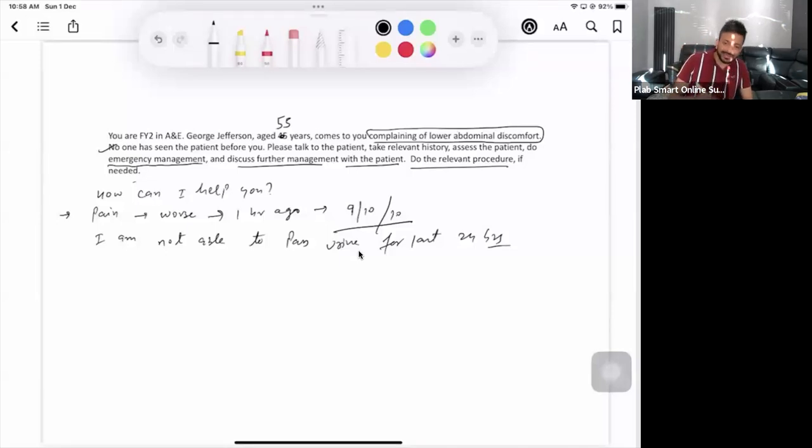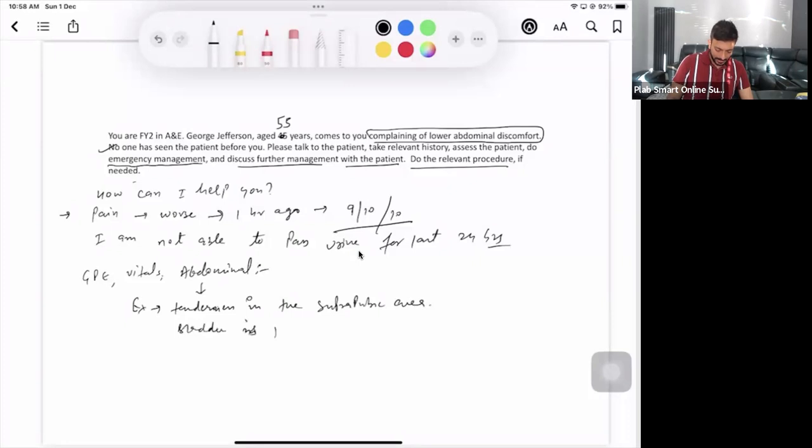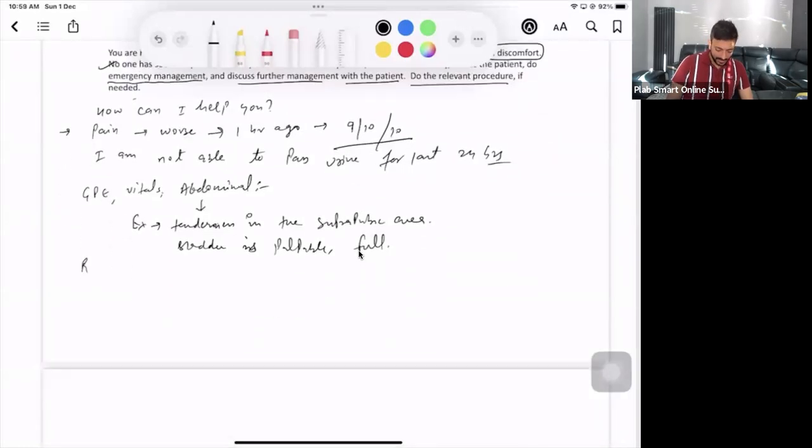What do you need to do? You need to relieve his pain. So what you will be doing? First of all, let's confirm if this patient has got urinary retention or not. How I can confirm? I've got one thing to do. I'll say, let me just have an examination. I'll do general physical examination and the main thing that I need to do is I will do abdominal examination. When you mention, they might give you the finding. Examiner will tell you, doctor, your patient has got tenderness in the suprapubic area. Bladder is palpable and bladder is full. So what do you understand? You will tell the patient that what you have got is urinary retention.